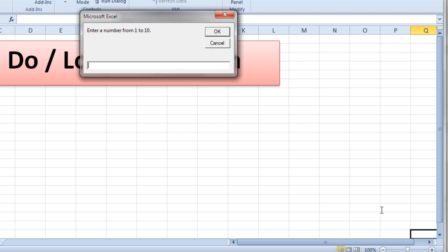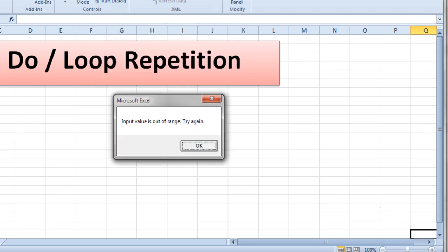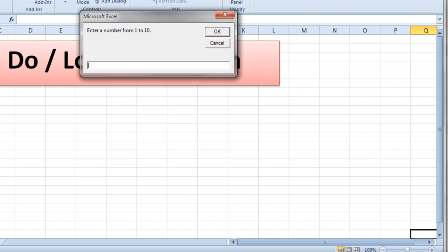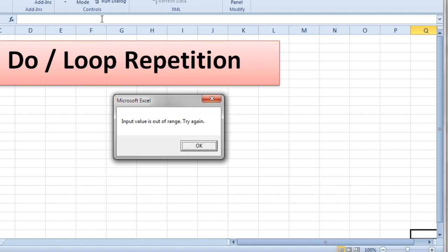Hit F5, enter a number from 1 to 10, I'll enter the 0 again. And it tells me the input value is out of range. Okay, let's try that 11 again. Same error message of course,